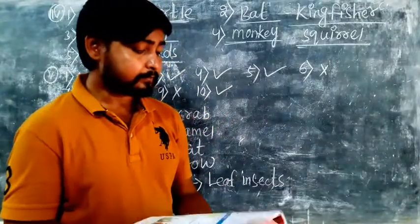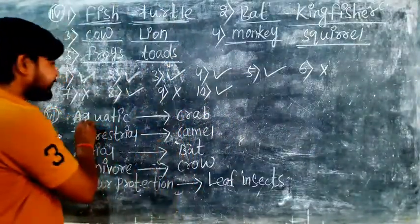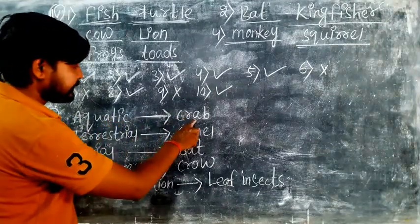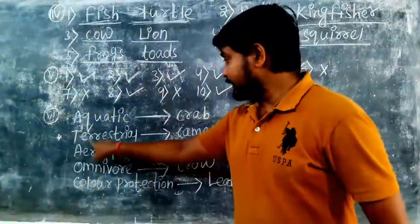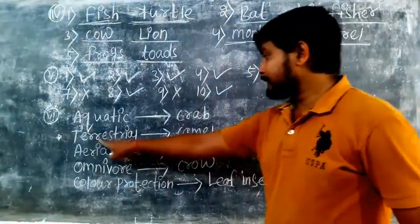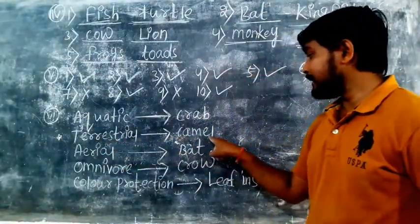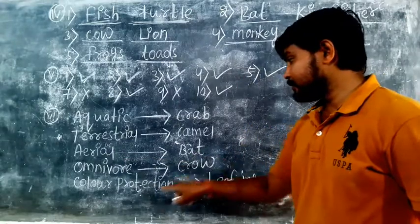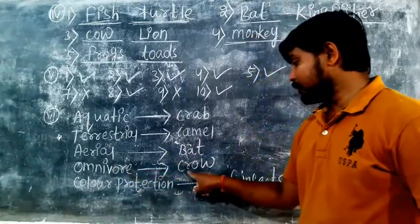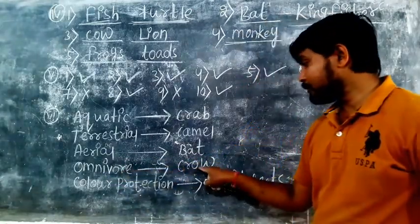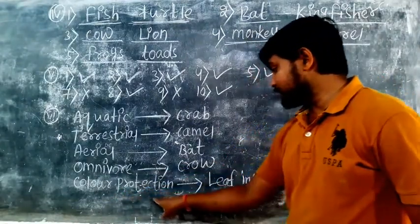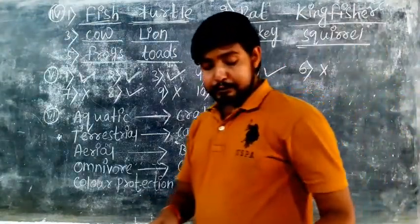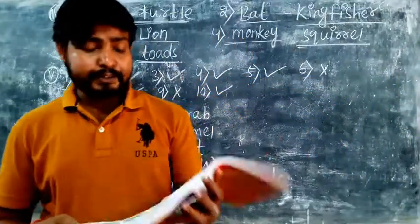Section six: match the following. Aquatic animals — crab. Terrestrial — camel. Aerial — bat. Arboreal — crow. Color protection — stick insects.